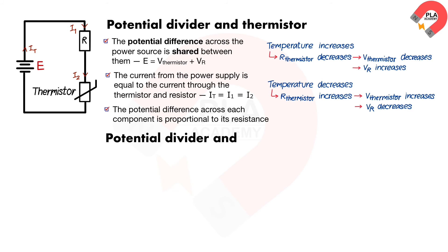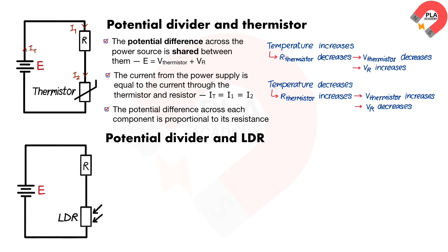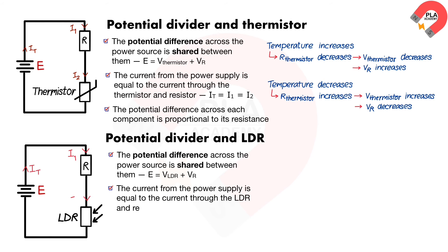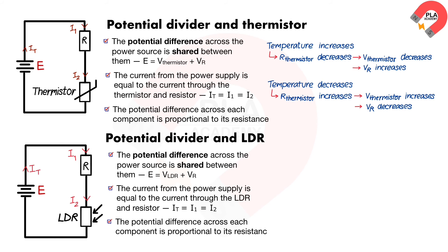In a potential divider with an LDR, the light-dependent resistor and resistor are connected in series, as shown in the diagram. The potential difference across the power source is shared between them, and the current from the power supply is equal to the current through the light-dependent resistor and resistor. The potential difference across each component is proportional to its resistance.